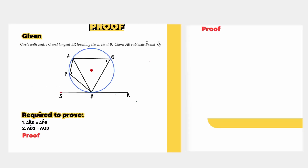Let's prove Theorem 5, which is the Tan-Chord theorem. In the information given, we have a circle with centre O, and the tangent SR touches the circle at B. Chord AB subtends angles P1 and Q1.